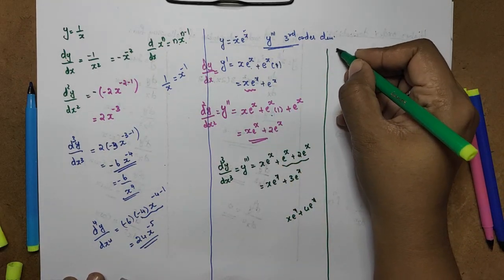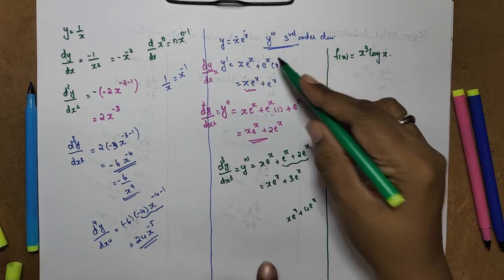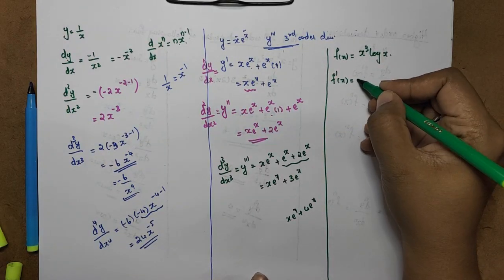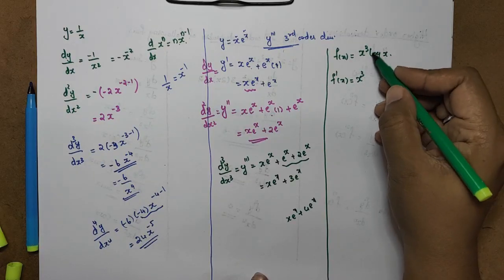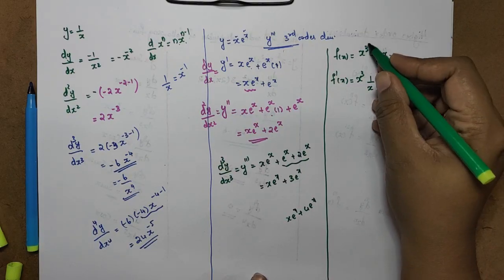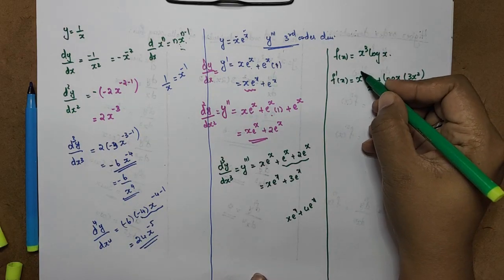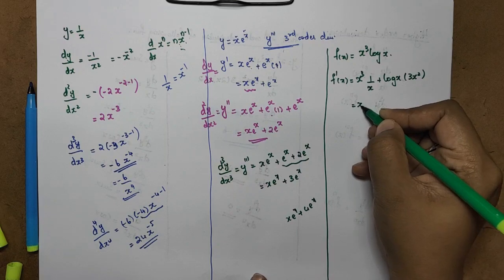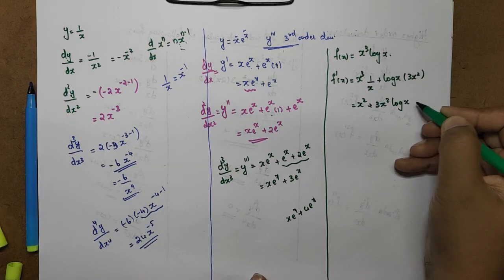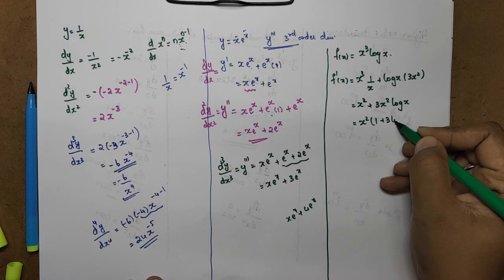One more question: f(x) = x³ log x. Find the third-order derivative. First, f'(x) using the product rule: first function x³ into derivative of log x is 1/x, plus second function log x into derivative of x³ is 3x². This gives x³·(1/x) + log x·3x² = x² + 3x² log x.